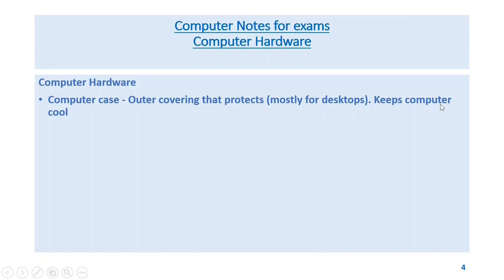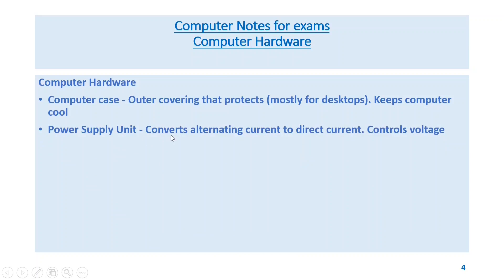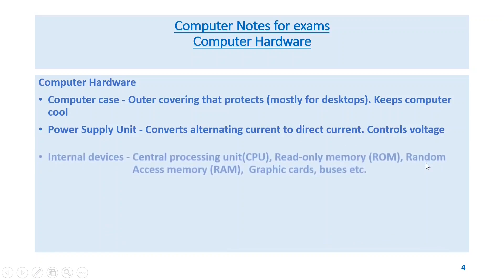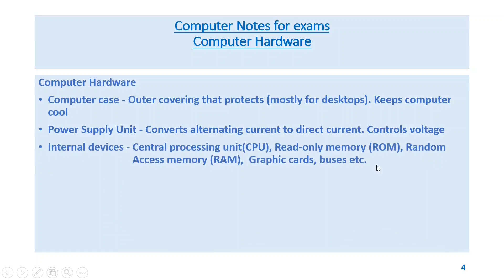Computer hardware: the computer case is the outer covering that protects the components — mostly for desktops, it keeps the computer cool; for laptops there is already a built-in cover. The power supply unit converts alternating current to direct current and controls voltage. Internal devices include the central processing unit, ROM, RAM, graphic cards, and buses.